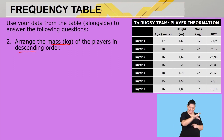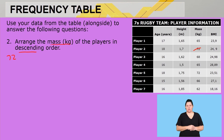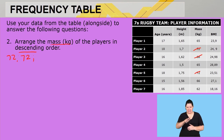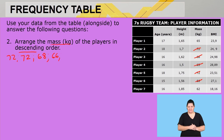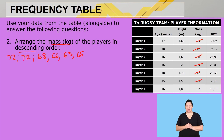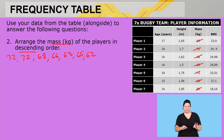The biggest mass value is 72, and there's another 72, so I list both. After that comes 68, then 66, then two values of 65, and lastly 62. Let's check: one, two, three, four, five, six, seven — all seven players are included.